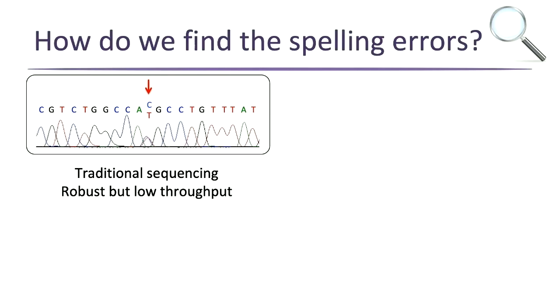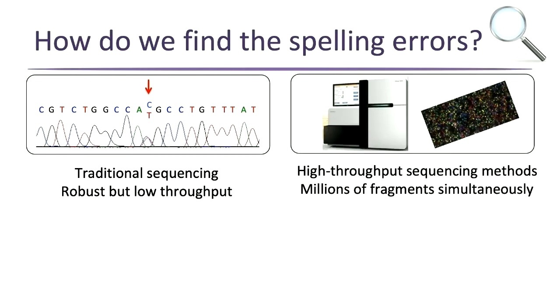To find the spelling errors in DNA, we sequence the genes — we read the DNA. This sequencing technology has been around for about 40 years. Each peak in a different color represents either a C, G, T, or A, allowing us to pick out pieces of DNA, read the sequence, and find changes. It's robust technology, but fairly low throughput — a scientist has to go and read those letters and look for changes.